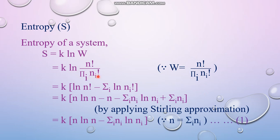The logarithmic expression is expanded, so it becomes ln N factorial minus the sum over i of ln N_i factorial. Then Stirling's approximation is applied. The part ln N factorial can be written as N ln N minus N, whereas this part becomes the sum over i of N_i ln N_i plus the sum over i of N_i.